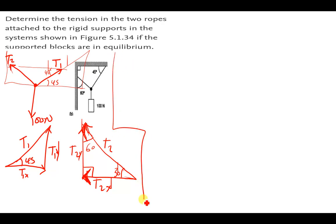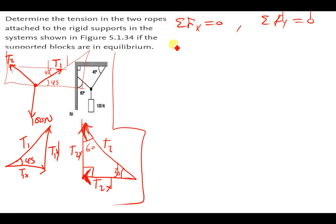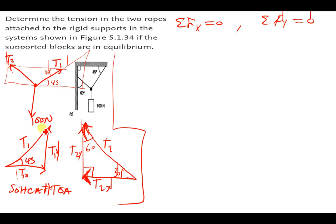Let's begin the summation. The summation of forces in the x direction should equal zero, and the summation of forces in the y direction should also equal zero. In the x direction, we have the x component of T1 and the x component of T2. From SOH-CAH-TOA, if the x component is the adjacent side, we use cosine.